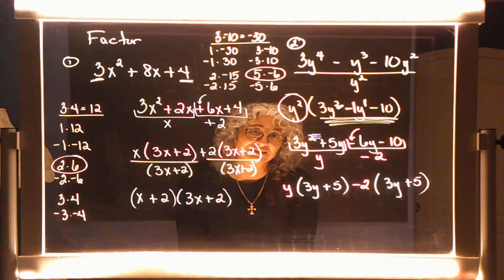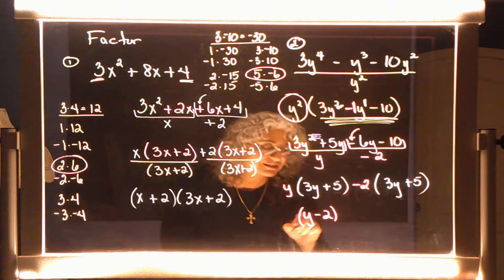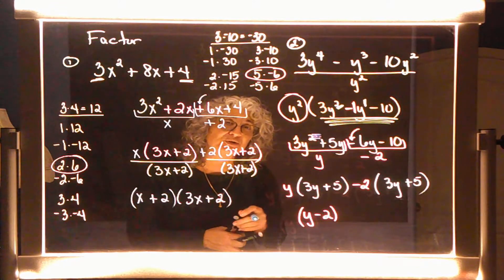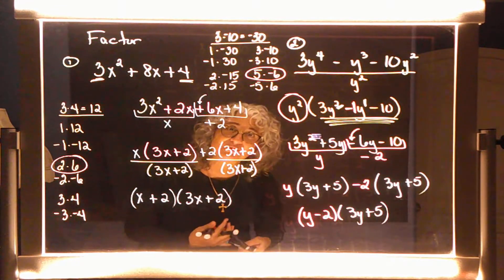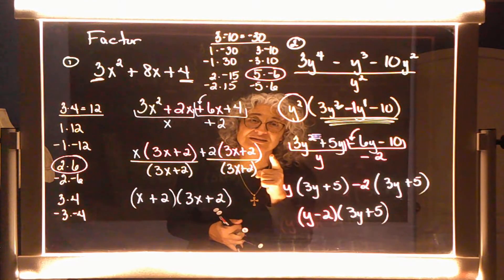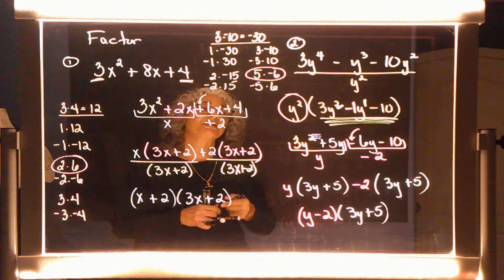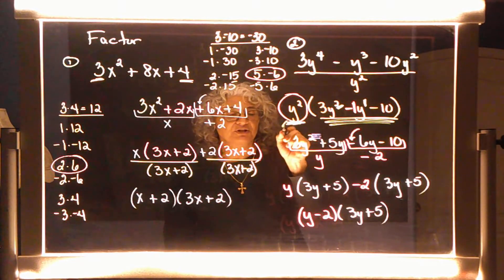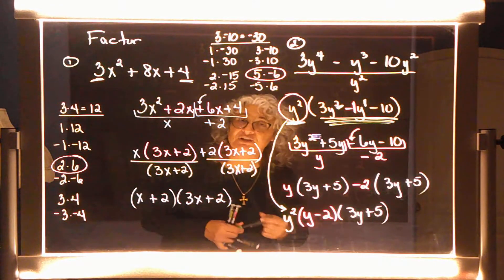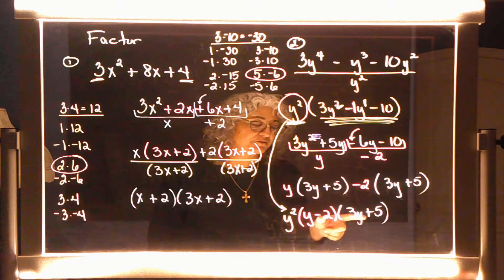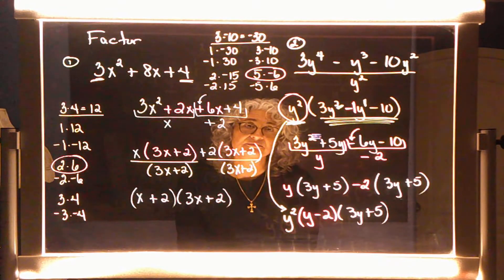You're going to have this y minus two — and it was distributed to the 3y plus five, wasn't it? But wait, not quite the final answer. Why not? Because in the beginning you factored out this y squared. So this y squared comes back and gets written in the front. After you multiply the two parentheses, you have to distribute the y squared, and you end up with the original problem.